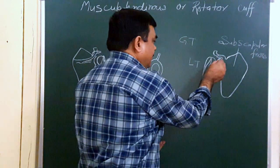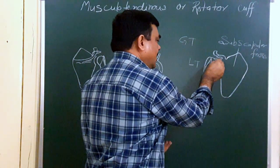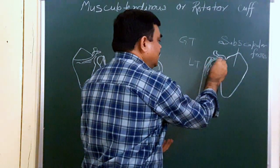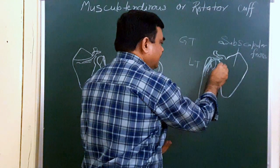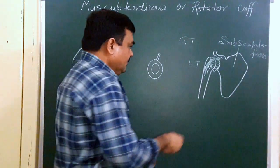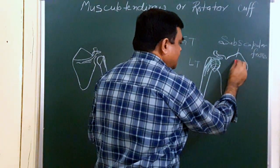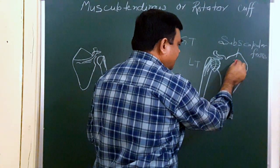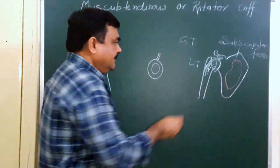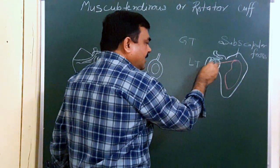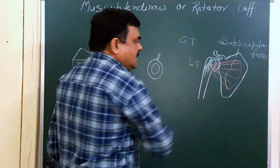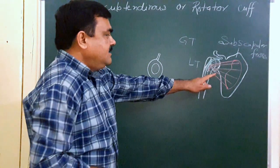Here a muscle is present — the long head of the biceps. Here is the position of the capsule of the shoulder joint. In the subscapular fossa there is attachment of the subscapularis muscle. This muscle is inserted on the lesser tubercle. This is the anterior group.